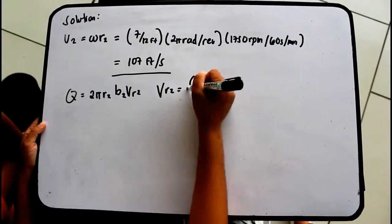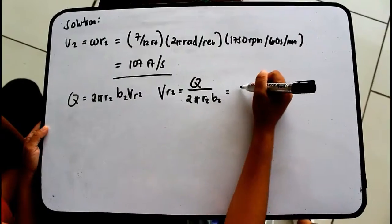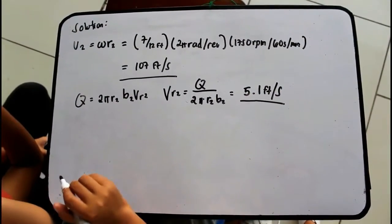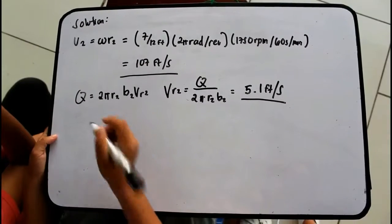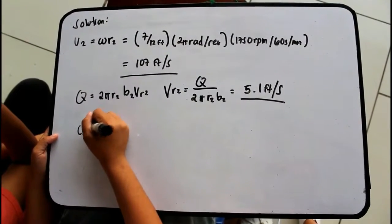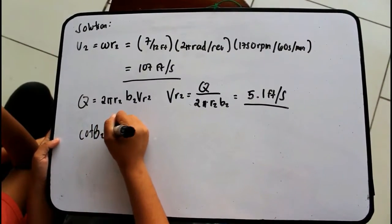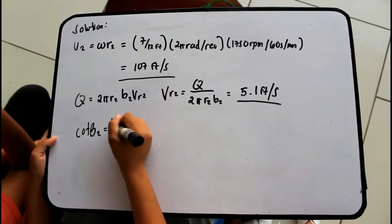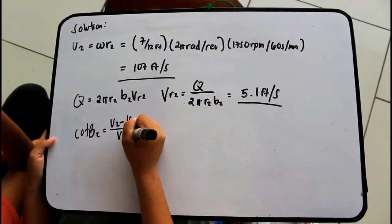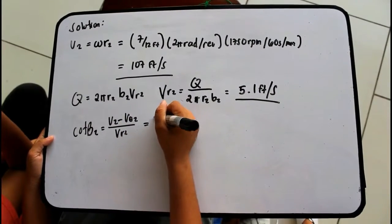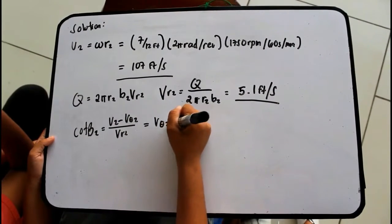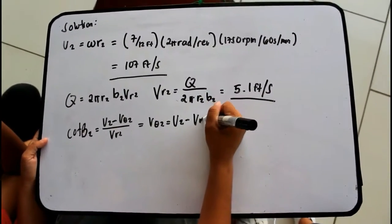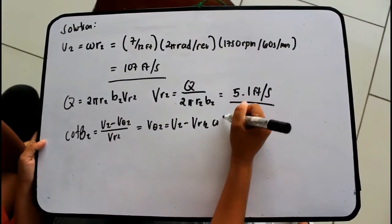Q is equal to 5.1 feet per second. Now let us solve for cot beta-2, which gives us: V-theta-2 equals U2 minus Vr2 times cot beta-2, which equals 95.0 feet per second.